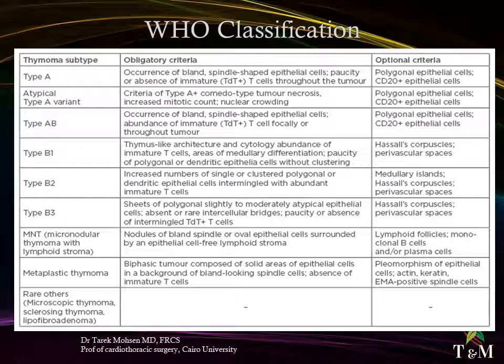Micronodular thymoma with lymphoid stroma (MNT) — nodules of bland spindle or oval epithelial cells surrounded by an epithelial cell-free lymphoid stroma; optional: lymphoid follicles, mature B-cells and plasma cells. Metaplastic thymoma — biphasic tumor composed of solid areas of epithelial cells in a background of bland-looking spindle cells, absence of immature T-cells; optional: pleomorphism of epithelial cells, actin-keratin-positive spindle cells. Rare others include microscopic thymoma, sclerosing thymoma, and lipofibroadenoma.